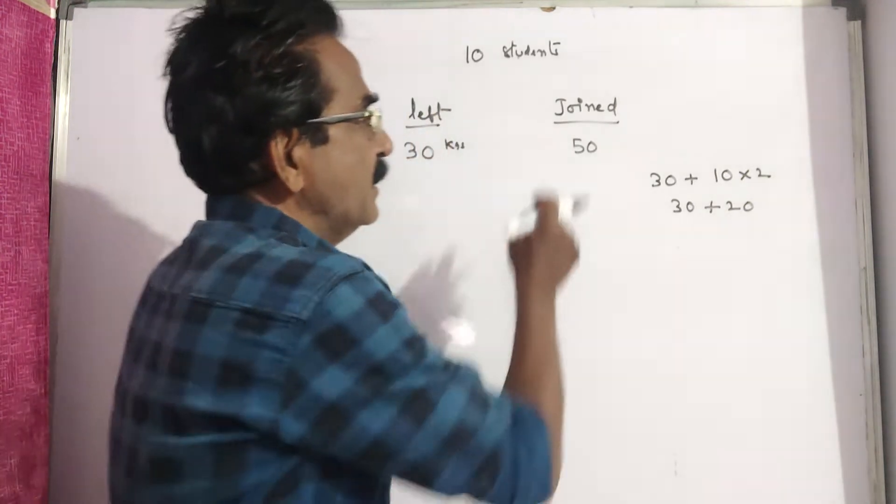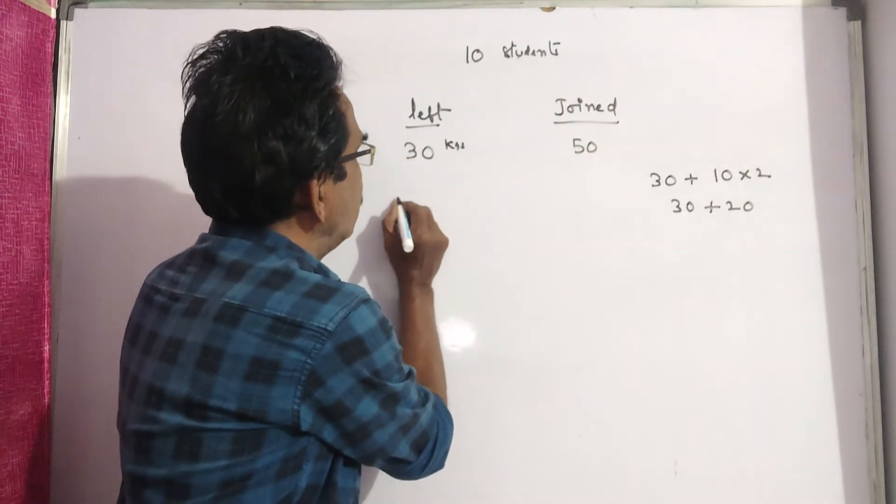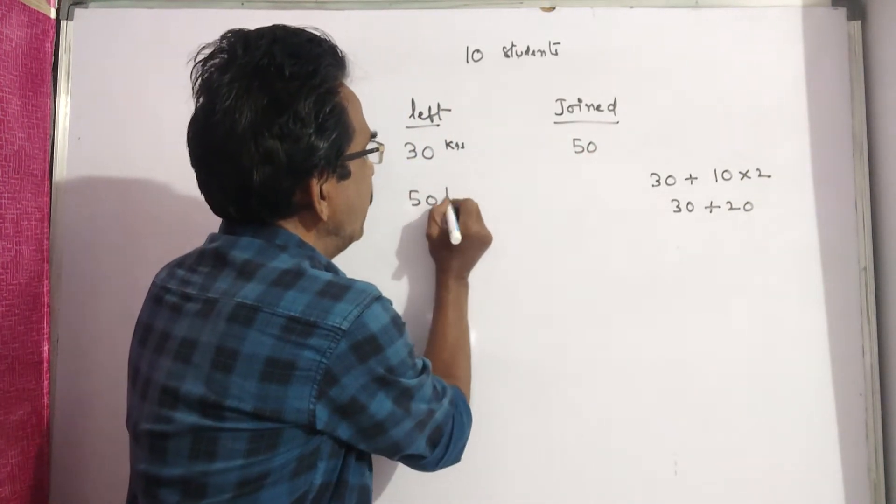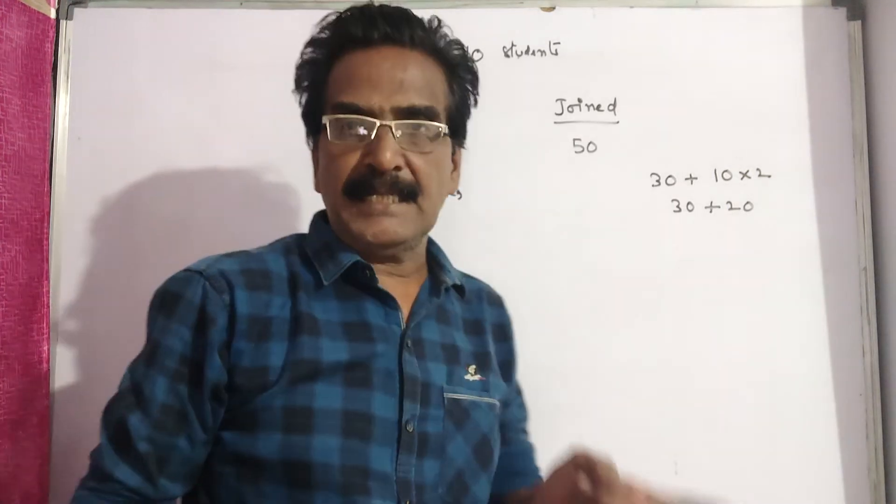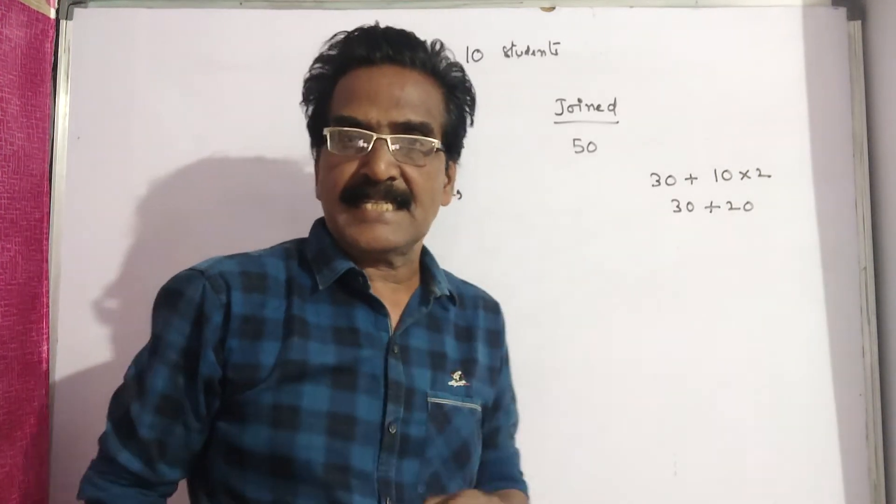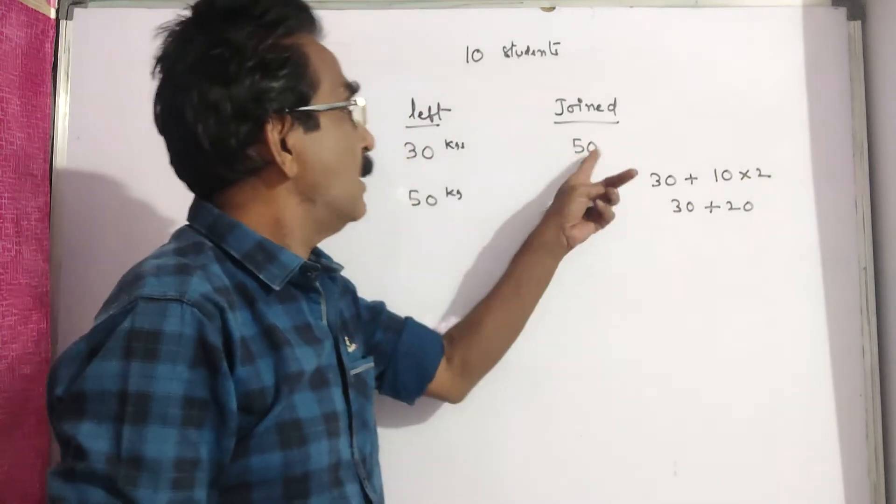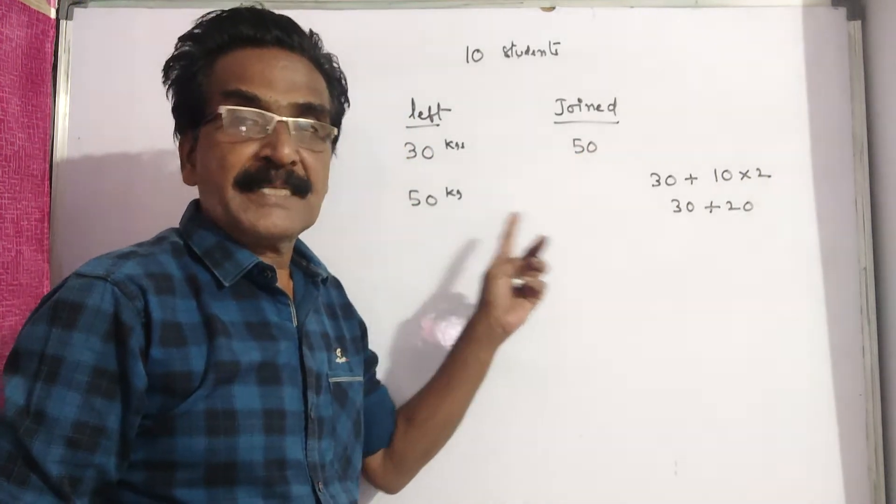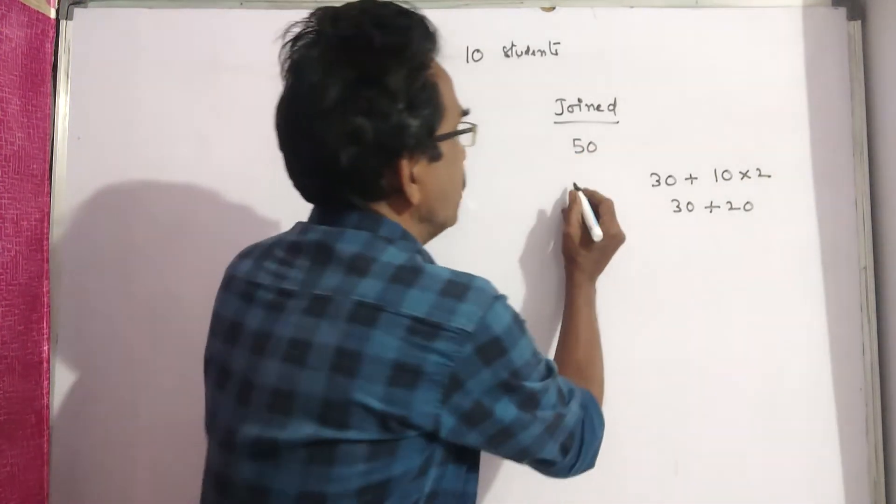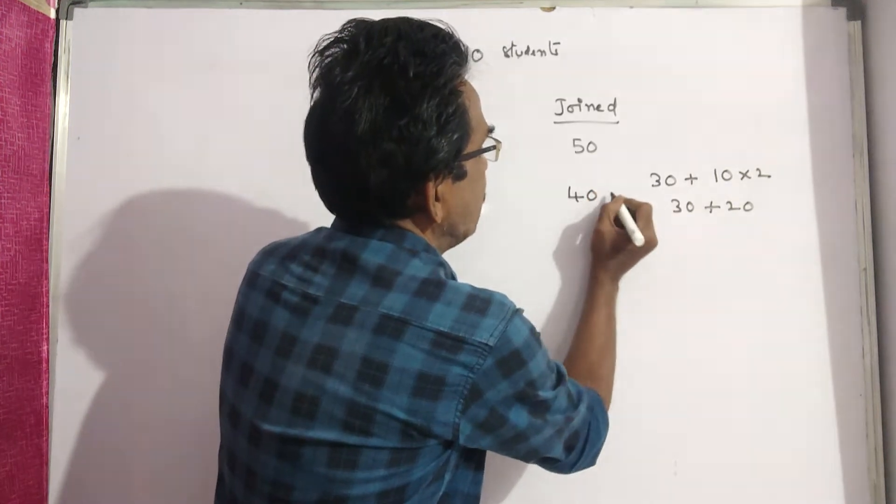After a few months, this 50 kgs person left and a new person joined whose weight is 10 kgs less than the person who left now. So that is 50 minus 10, 40 kgs person joined.